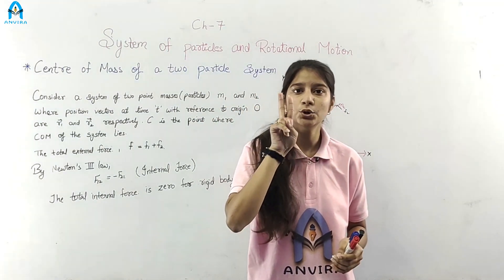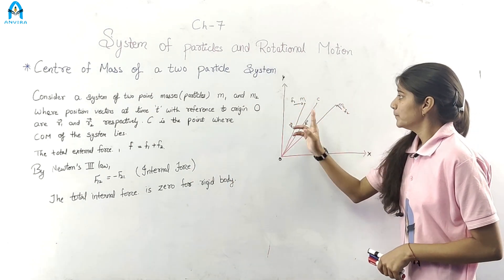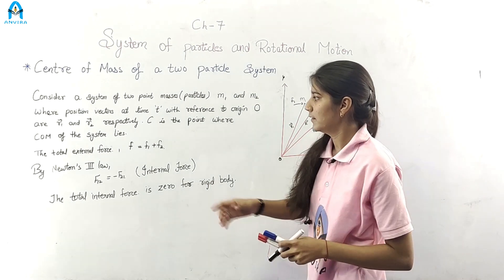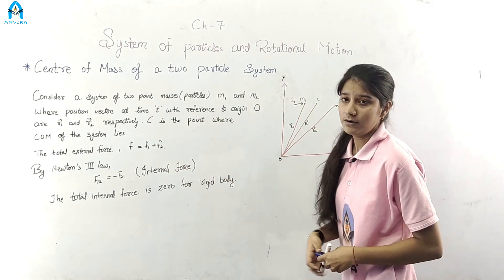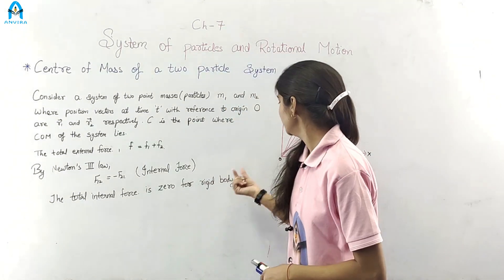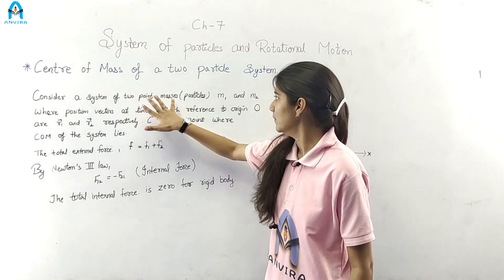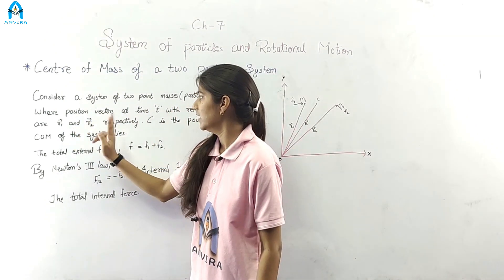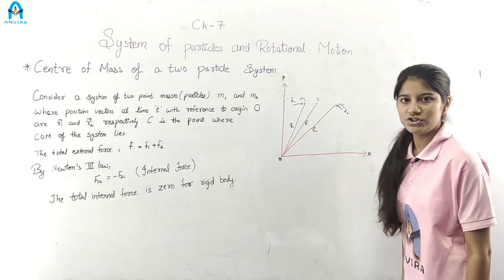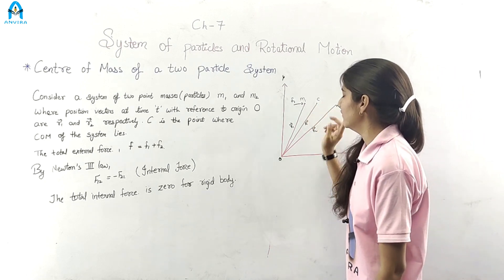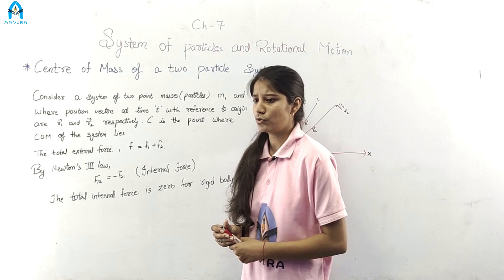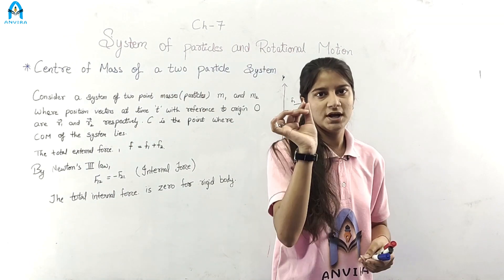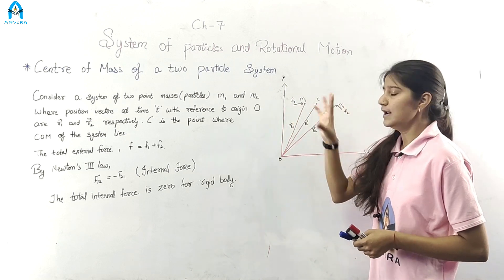A system in which only two particles exist. Let we have two particles M1 and M2. R1 is the position vector from the reference or origin point O. Consider a system of two point masses M1 and M2, where position vectors at time t with reference to origin are R1 and R2. We can consider a hydrogen atom as an example — it has only one proton and one neutron.